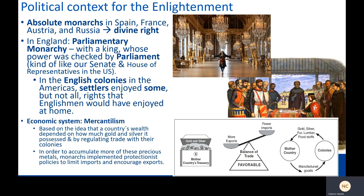England had a slightly different system. It had a parliamentary monarchy with a king whose power was checked by a parliament, kind of like our Senate and House of Representatives in the United States. In the English colonies in the Americas, white settlers enjoyed some, but not all, of the rights that Englishmen would have enjoyed at home. And there we're going to find the seeds of the American Revolution.